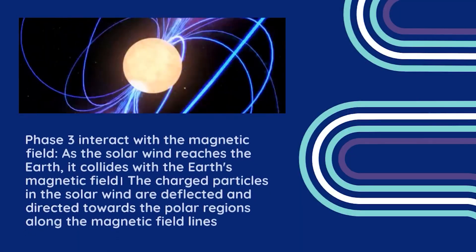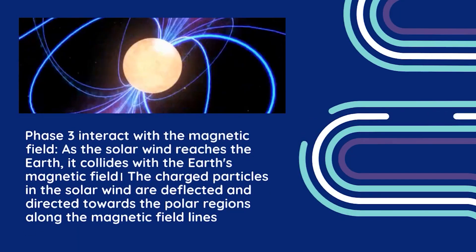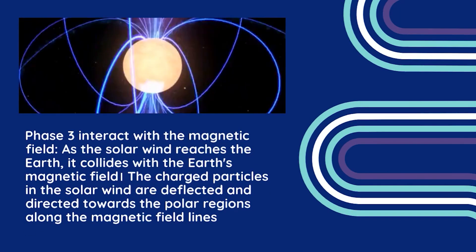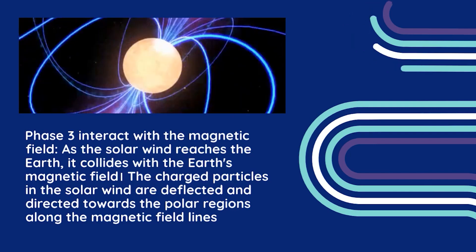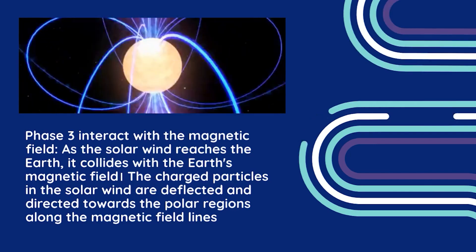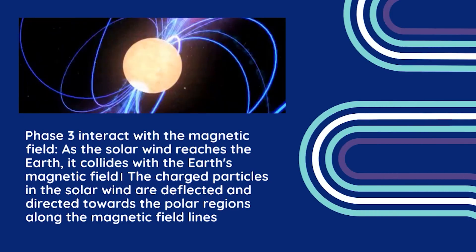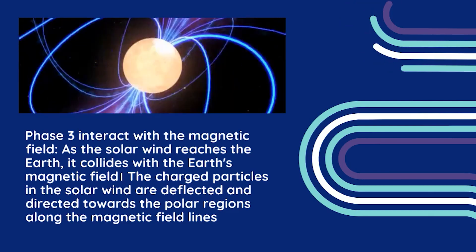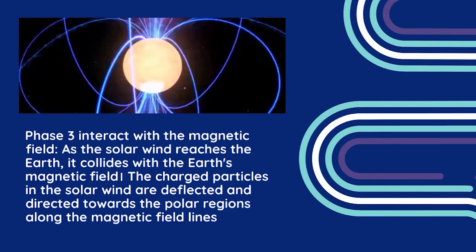Phase 3 is Interaction with the Magnetic Field. As the solar wind reaches the Earth, it collides with the Earth's magnetic field. The charged particles in the solar wind are deflected and directed towards the polar regions along the magnetic field lines.